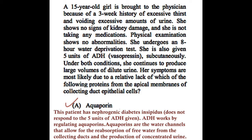With the information provided, it is very clear that the patient has diabetes insipidus. Diabetes insipidus is characterized by intense thirst and polyuria, together with an inability to concentrate urine owing to lack of ADH. There are two types of diabetes insipidus: central and nephrogenic.